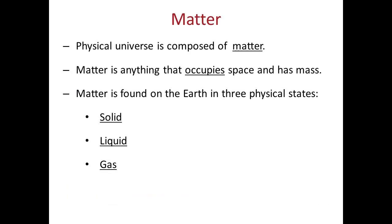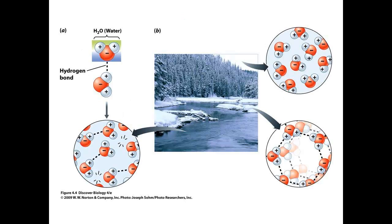Matter is defined as anything that occupies space and has mass. On Earth, matter is found in three physical states: matter can be a solid, a liquid, or a gas. Water, a chemical compound, can be found in all three of these states on the surface of the planet.